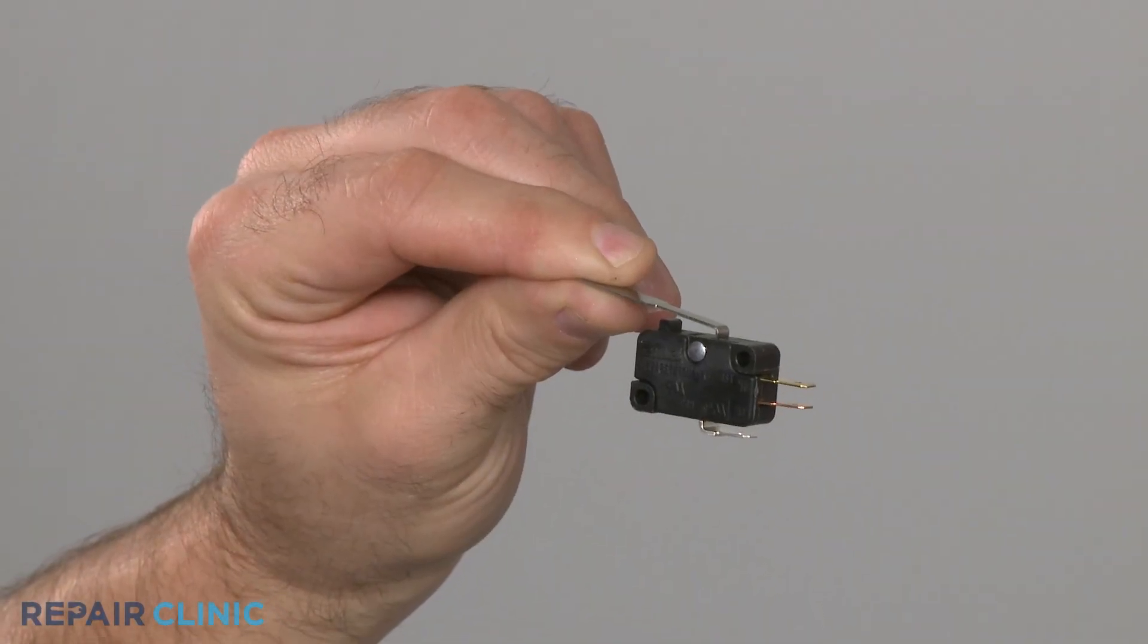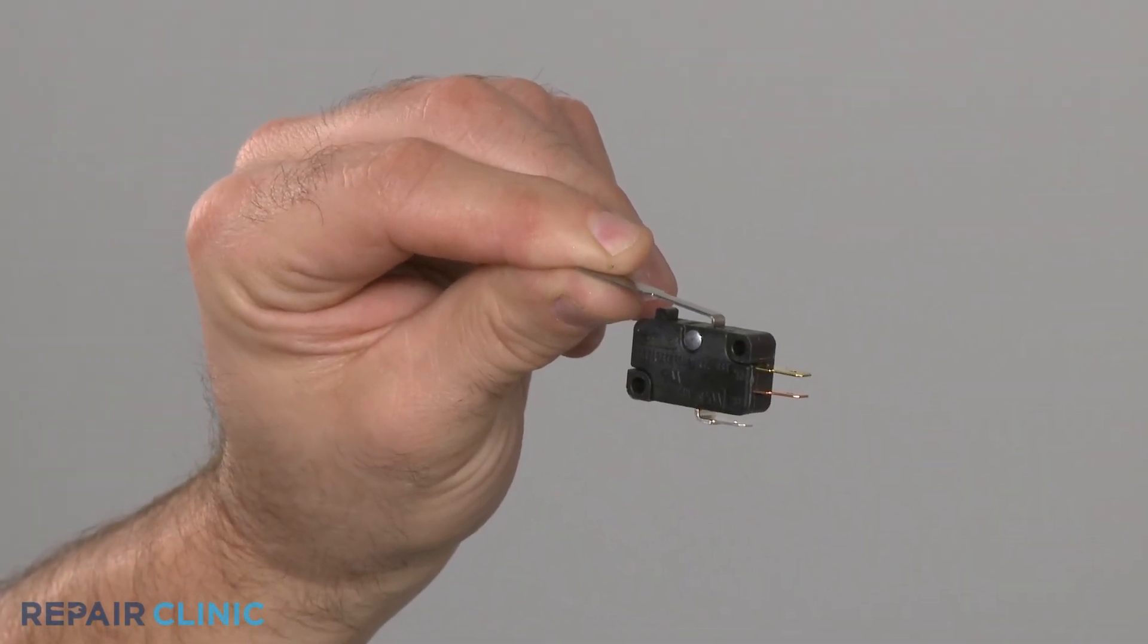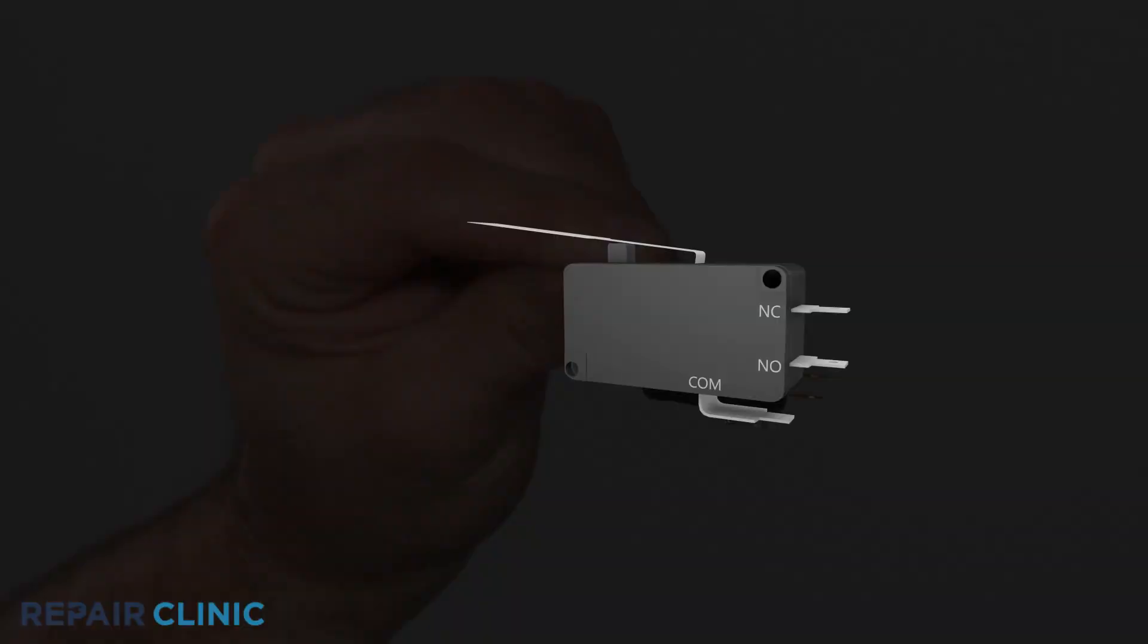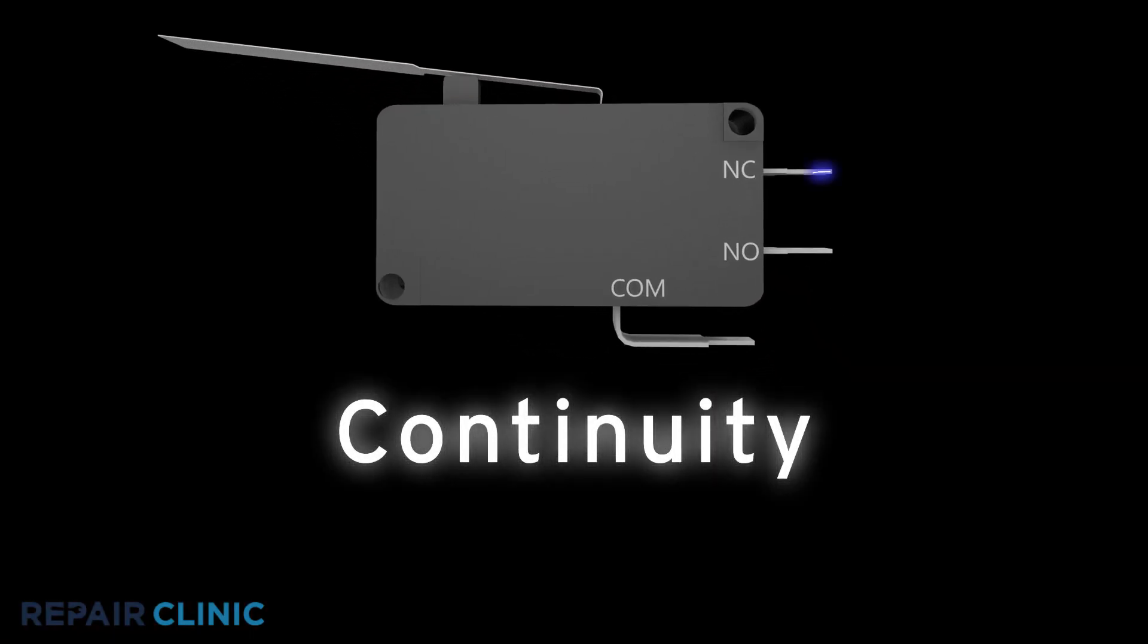Since you can't always tell if a switch has failed simply by looking at it, you'll need to perform a continuity test. A continuity test will determine if a continuous electrical path is present in the switch.